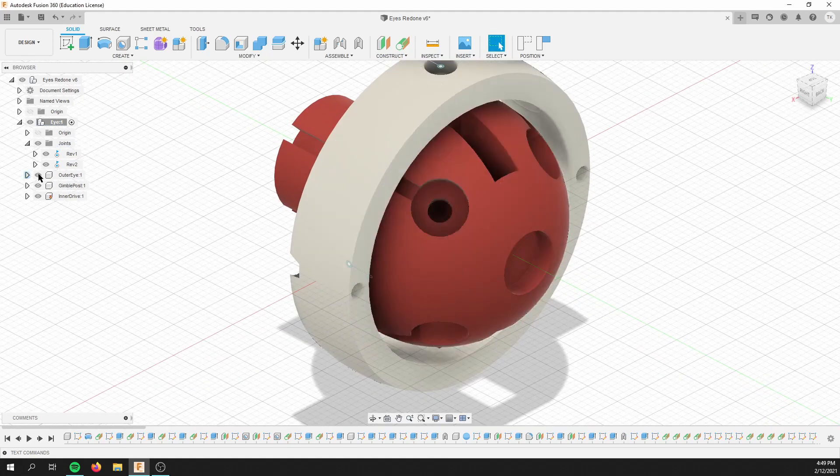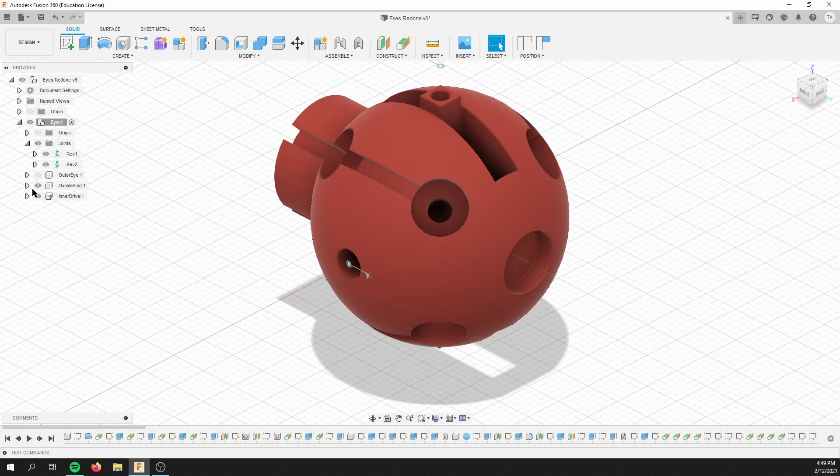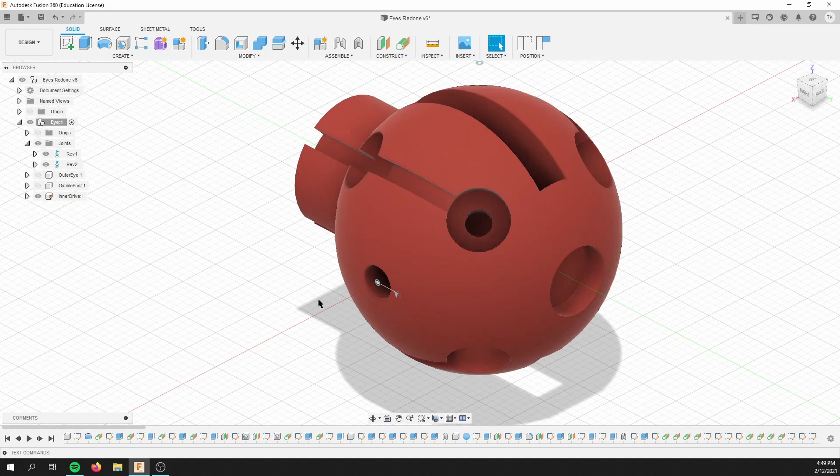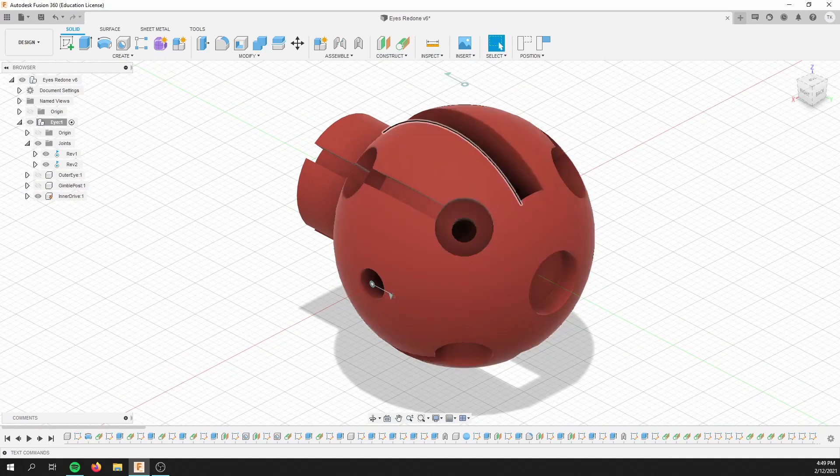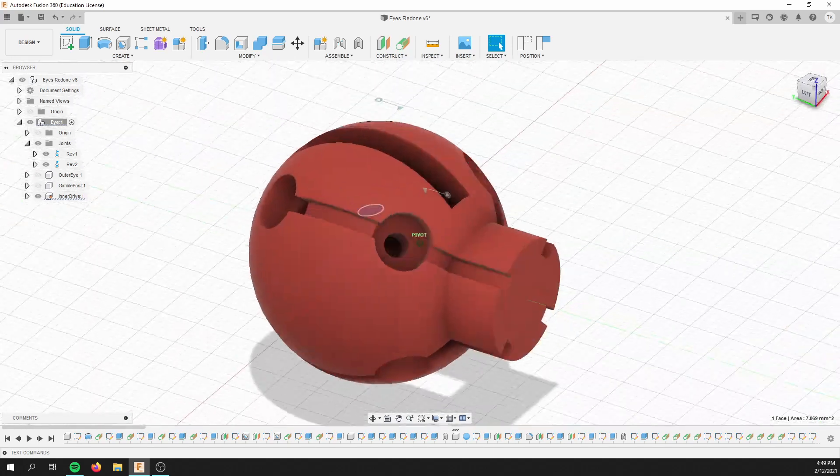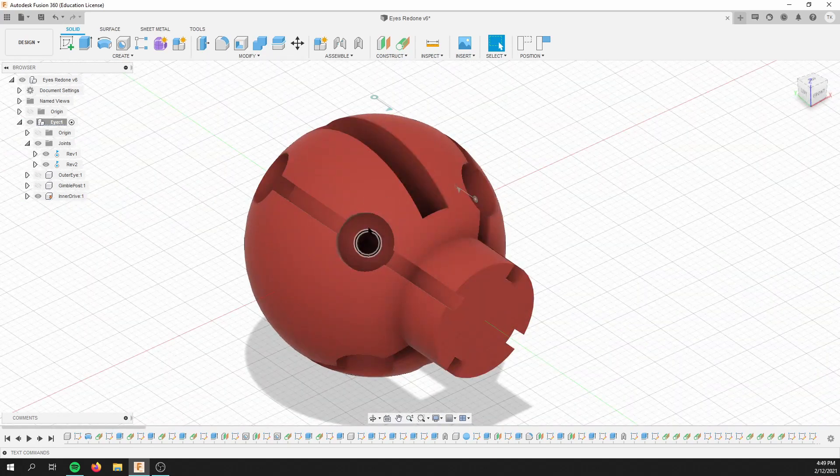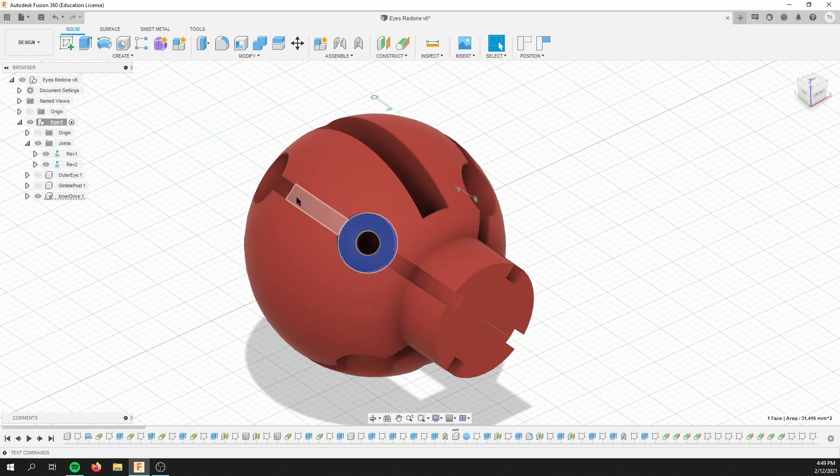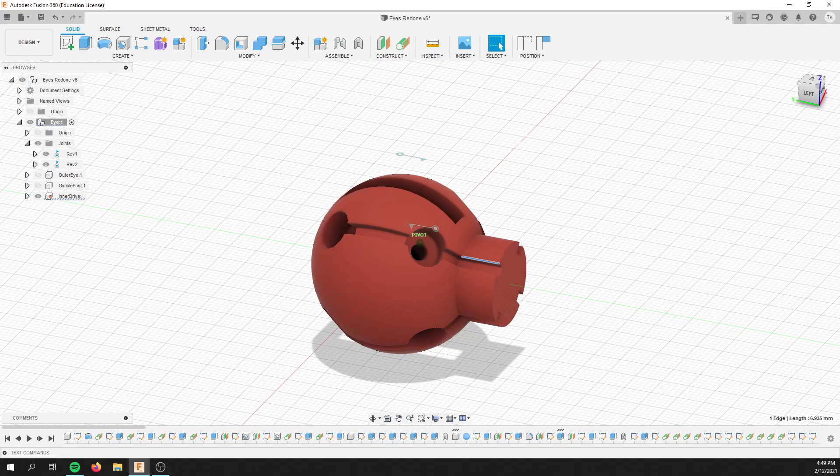Then if we take a closer look at the inner eye, we can see that there are these holes here for the electromagnets to go in. There's eight electromagnets. And the channels here are for the wires to come out. The electromagnets are evenly spaced around the sphere.